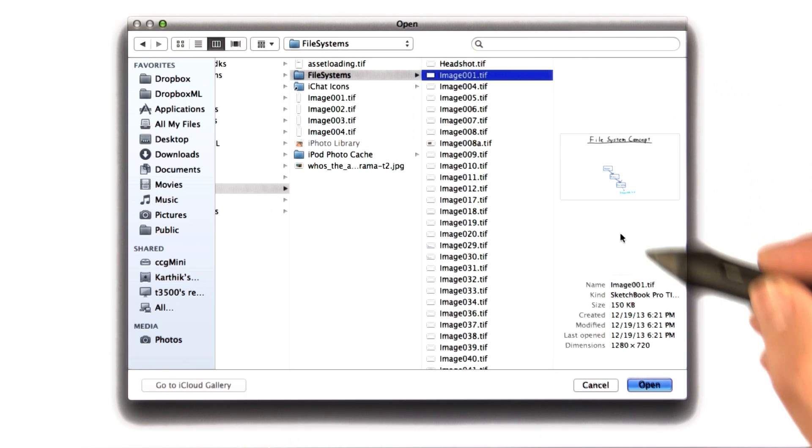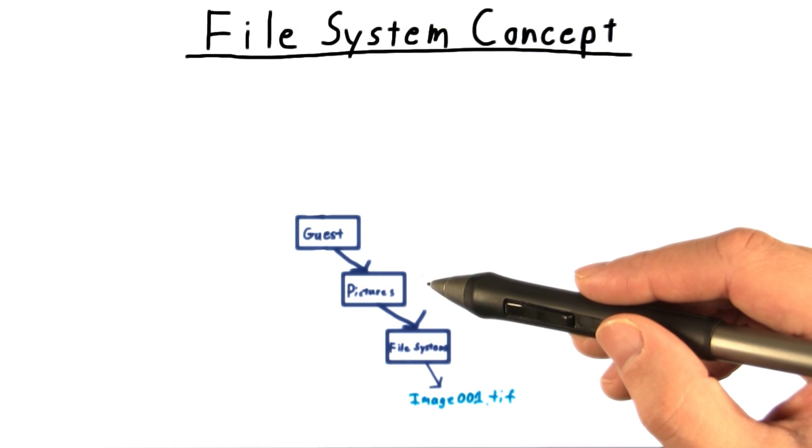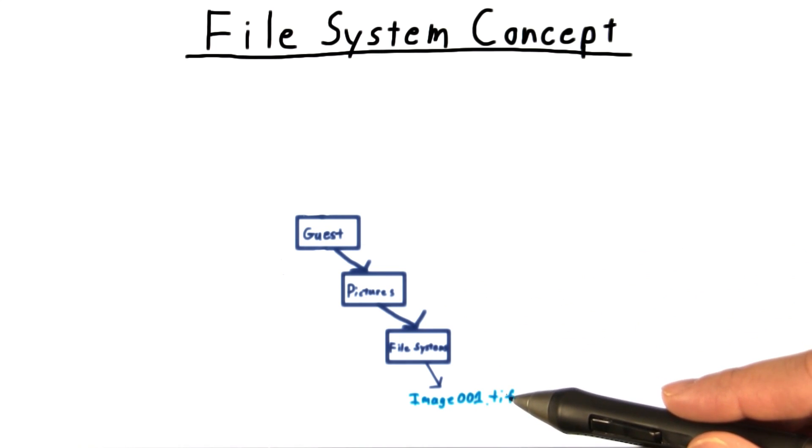There it is. I started off in my home folder. Inside of there, I went to pictures, and then to file systems. And there, I found the image that I was looking for.